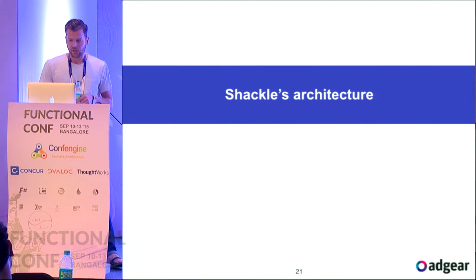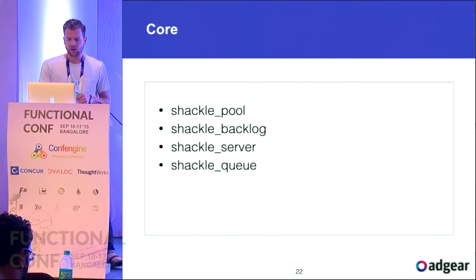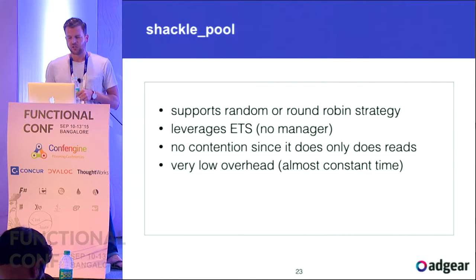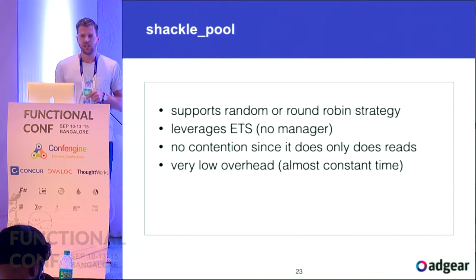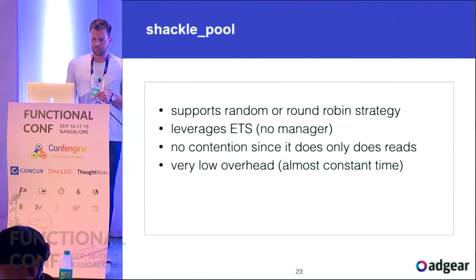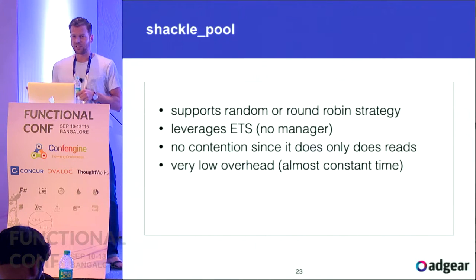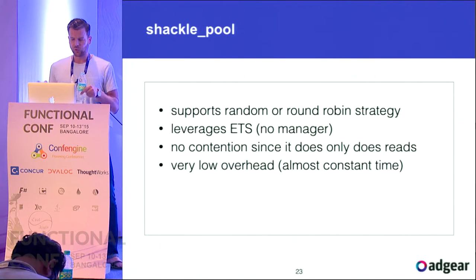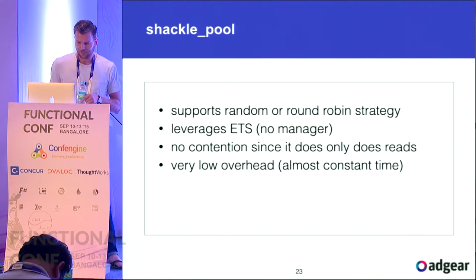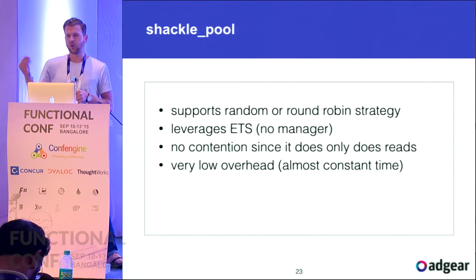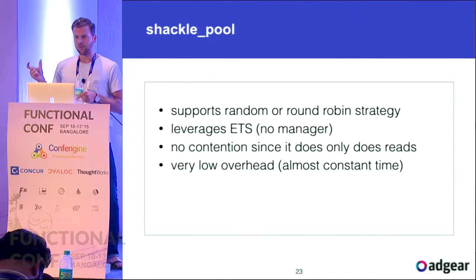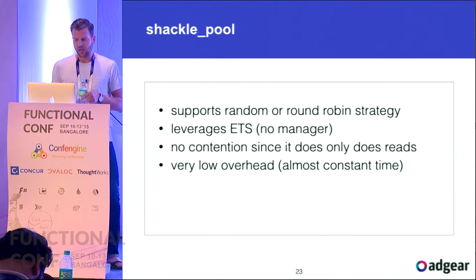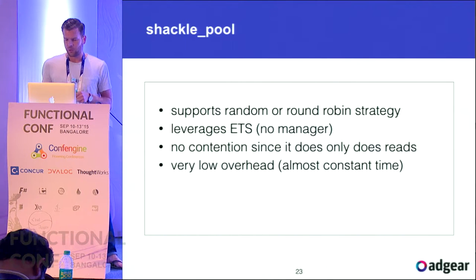The Shackle architecture. At the core there are four different modules implementing core functionalities. The first is shackle_pool, which supports different strategies — either random or round robin — and leverages ETS so there's no manager. This way we use the global hash table to distribute work across workers.